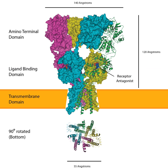Negative allosteric modulators of the AMPA receptor include: barbiturates (e.g., pentobarbital, sodium thiopental) — non-selective; ethanol — non-selective; inhalational anesthetics (e.g., cyclopropane, enflurane, halothane, isoflurane, sevoflurane) — non-selective; GYKI 52466; arampanel; perampanel; and talampanel.